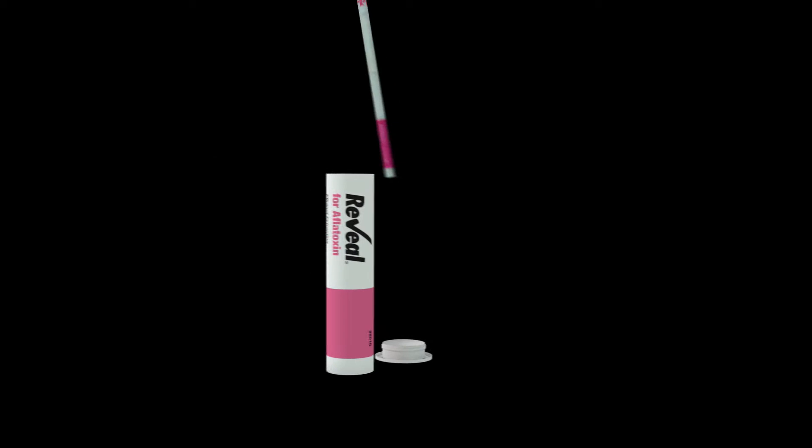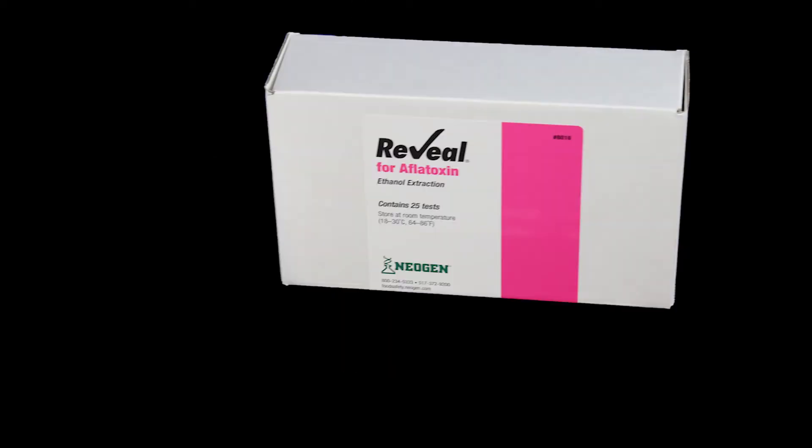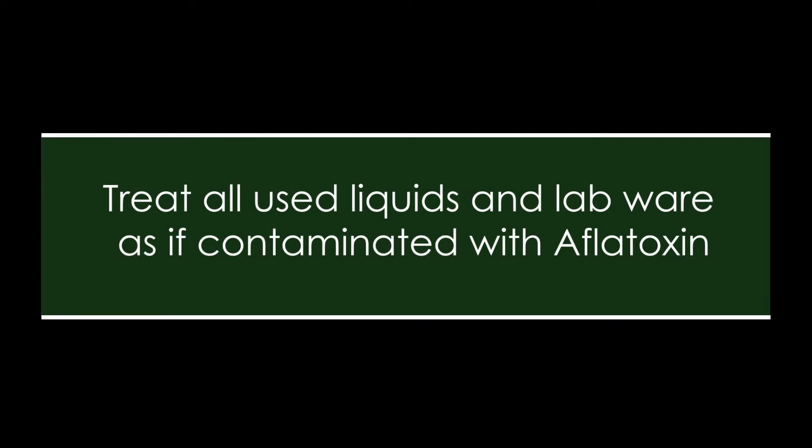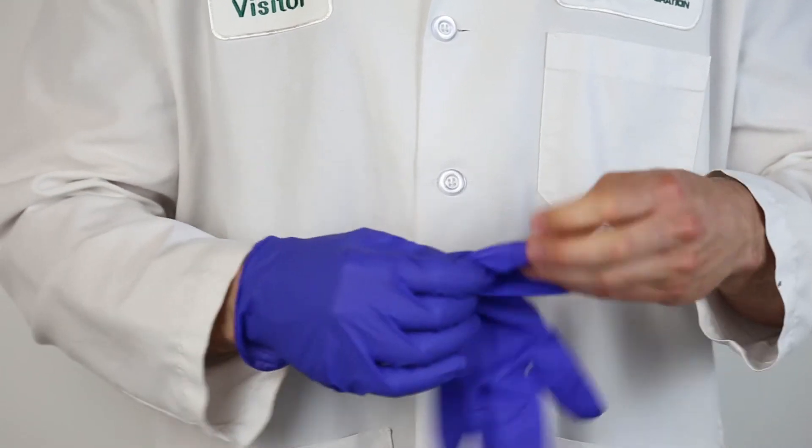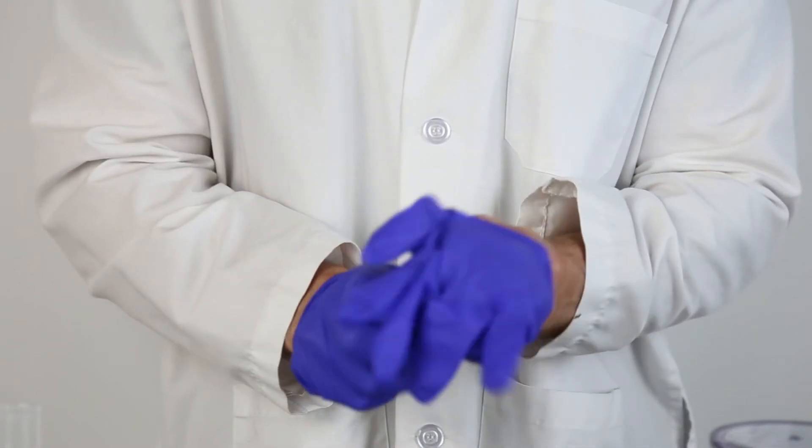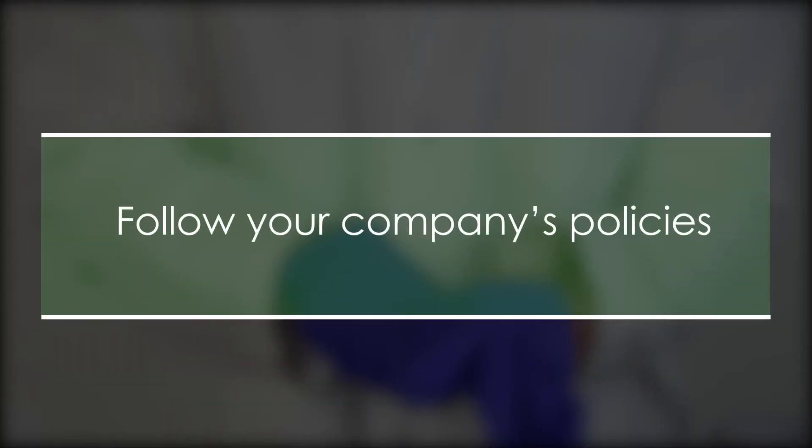Remember to always store the test strips in the stay dry tube at room temperature. The kit should be stored at room temperature when not in use. Do not use kit components beyond the expiry date. Treat all used liquids and lab wear as if contaminated with aflatoxin. Neogen recommends gloves and other protective apparel, although they're not required during testing. Be sure to follow your company's policies.